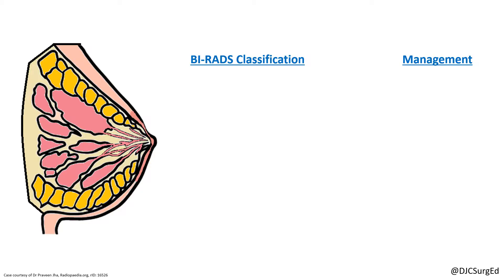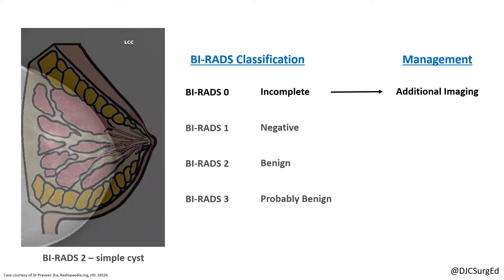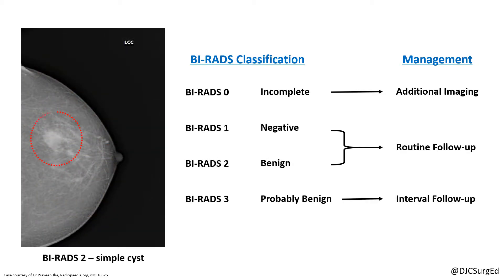The BI-RADS classification stratifies mammographic breast lesions by their risk of malignancy. BI-RADS 0 is an incomplete image or indeterminate or concerning findings on screening mammography that requires additional diagnostic imaging and evaluation. BI-RADS 1, 2, and 3 lesions are benign or likely benign and do not require a biopsy.